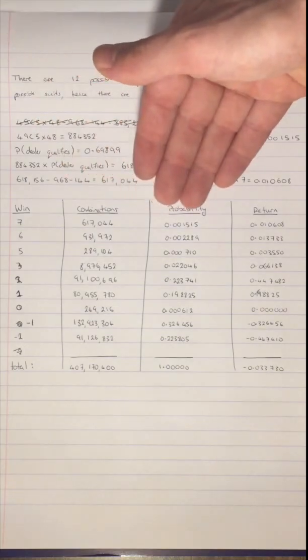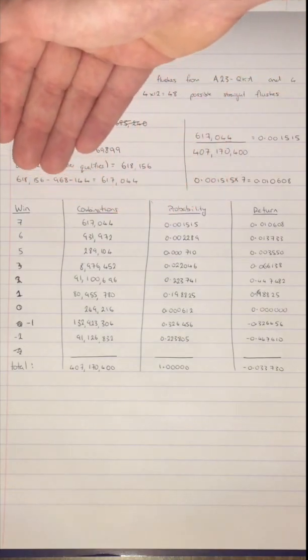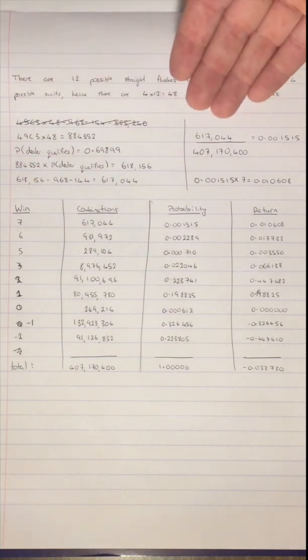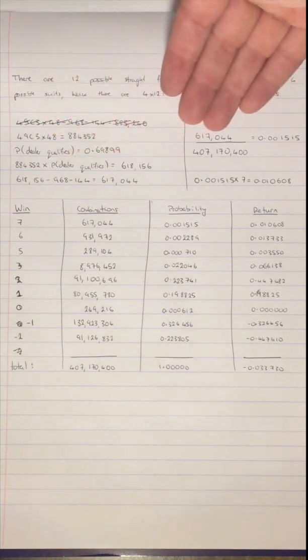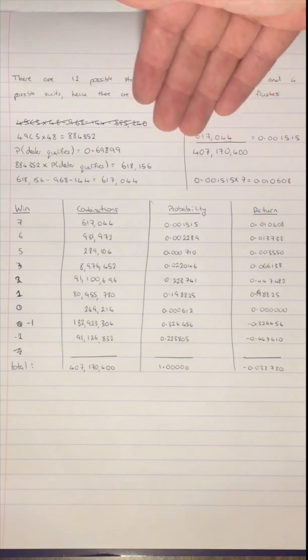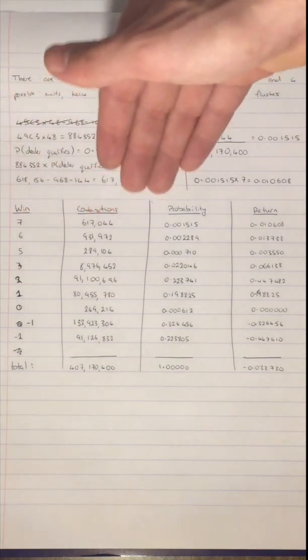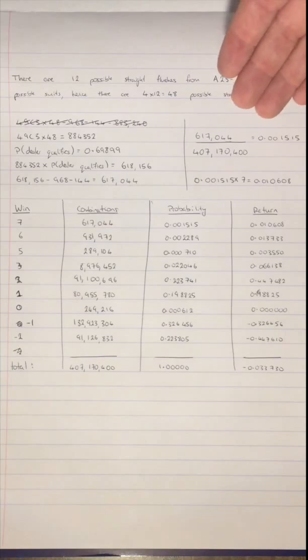To work out the probability of each win occurring, we simply look over here and we divide the amount of combinations by the total number of combinations which, in the case of the first one, is 0.001515.